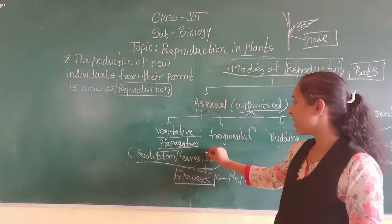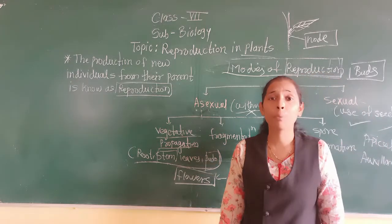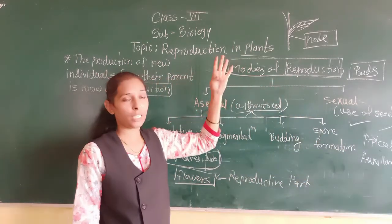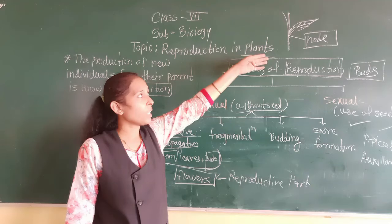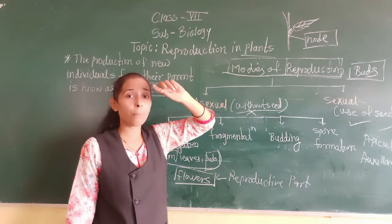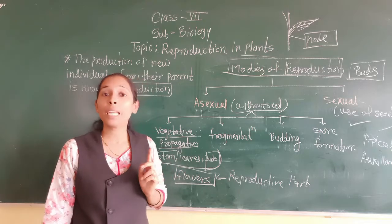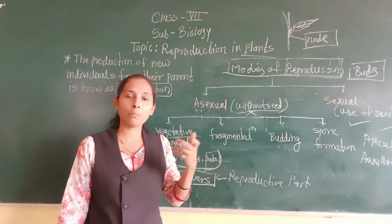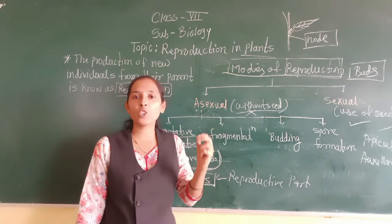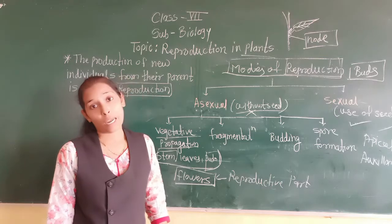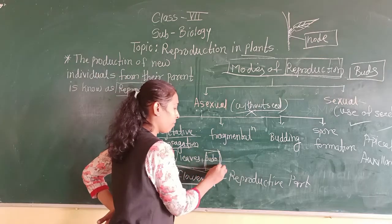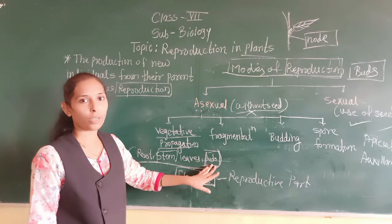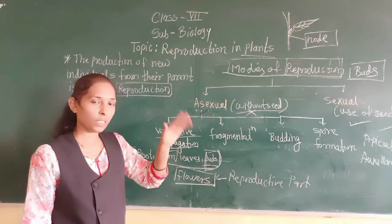Some plants are there which can grow with the help of buds. A very well-known example is the potato. On the potato we can see there are scars or buds there, and these buds are also called the eye of a potato. You can separate each bud and sow it into the soil, and after certain days each bud will grow into a new plant. So with the help of these buds, we can grow a new plant.